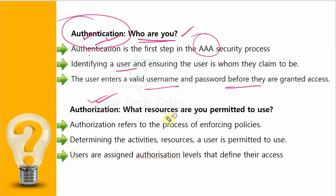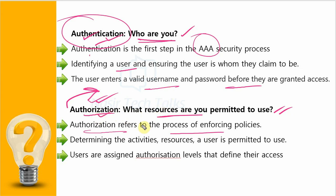Then Authorization: 'What resources are you permitted to use?' When you log into the system with your username and password, that doesn't mean you get full system access. Authorization controls how much access you can have within the system — which resources you can access. Authorization refers to the process of enforcing policy. When you complete authentication and log in, authorization enforces different policies against your credentials — your username and password. It determines what activities and resources a user is permitted to use.